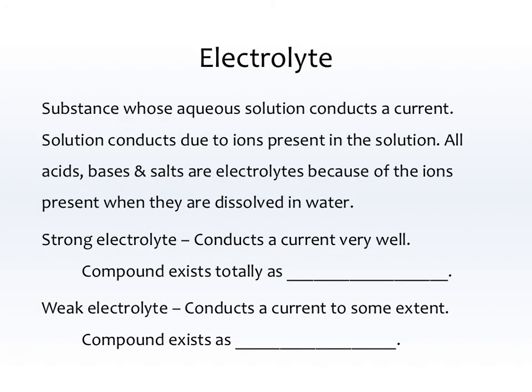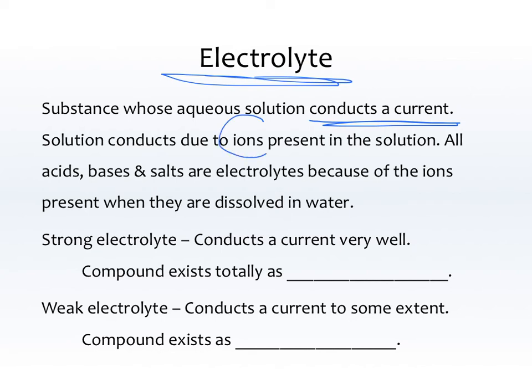An electrolyte is a substance whose aqueous solution conducts a current. The solution conducts due to ions that are present in the solution. All acids and bases and salts are electrolytes because of the ions present when they're dissolved in water.